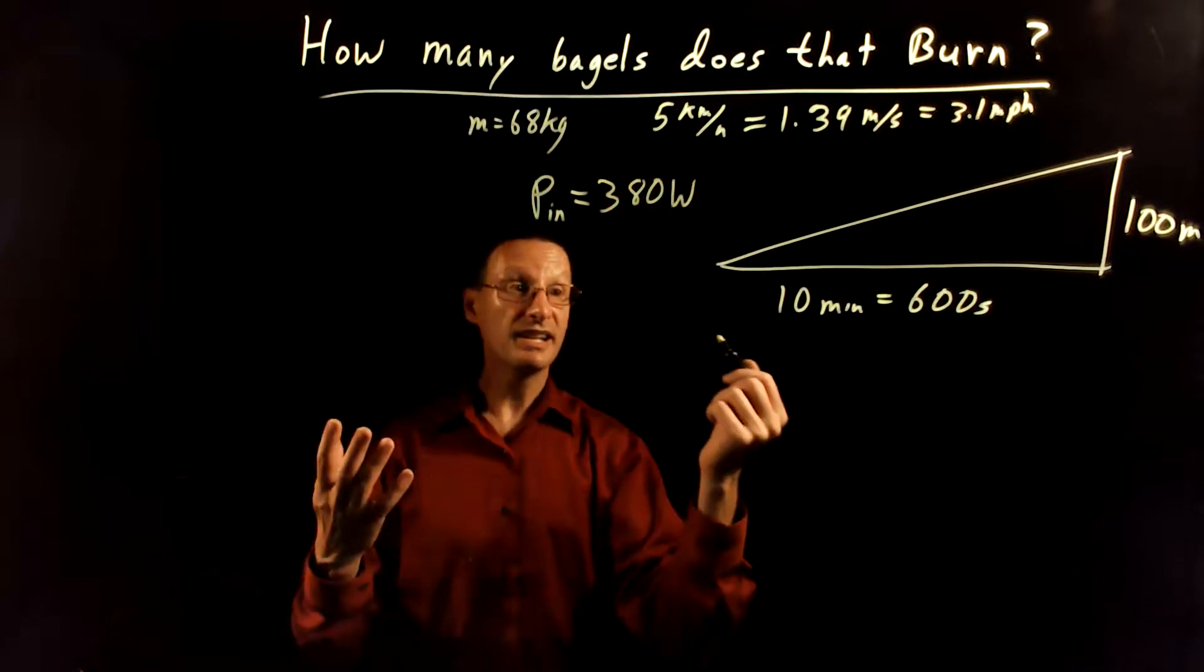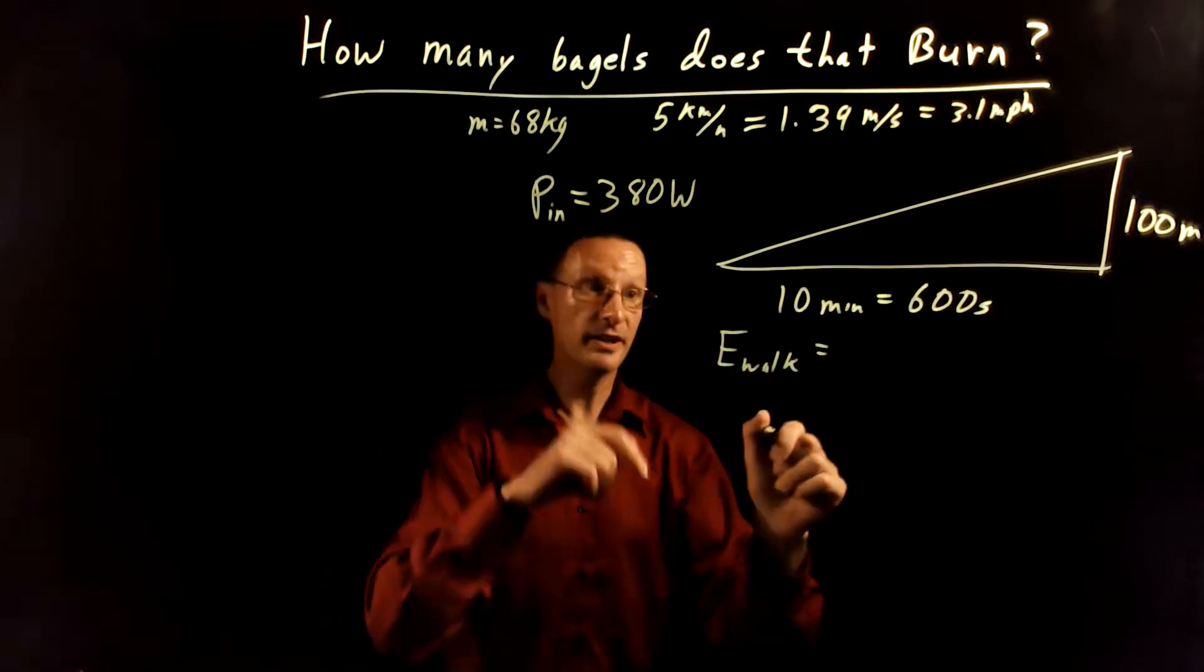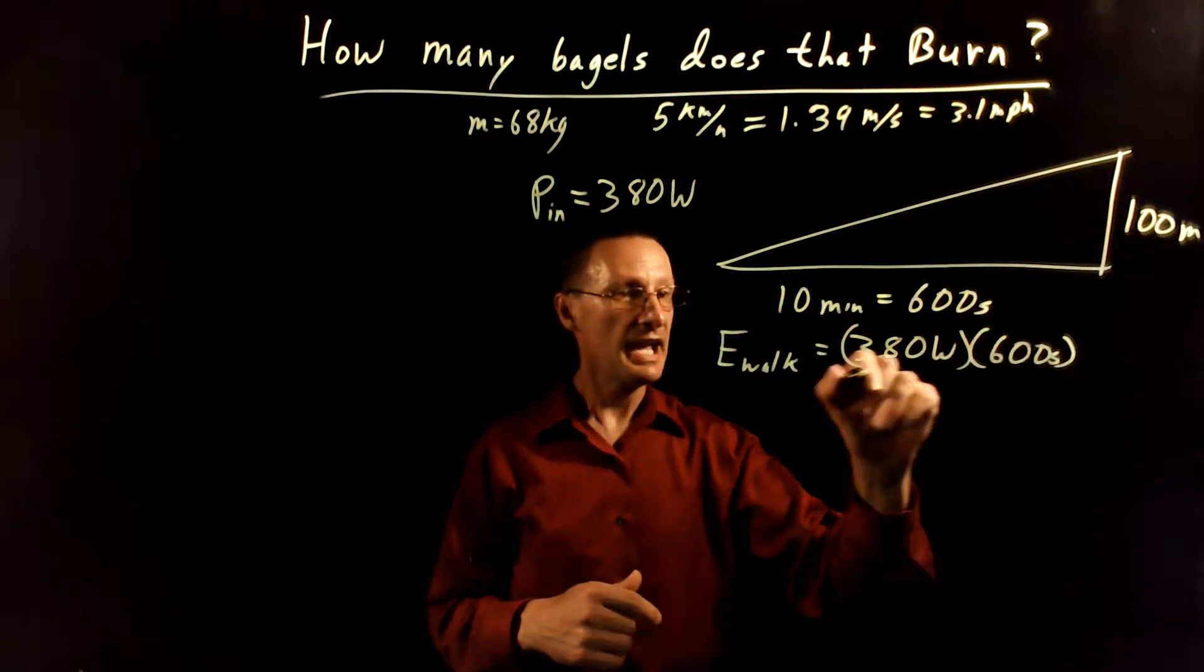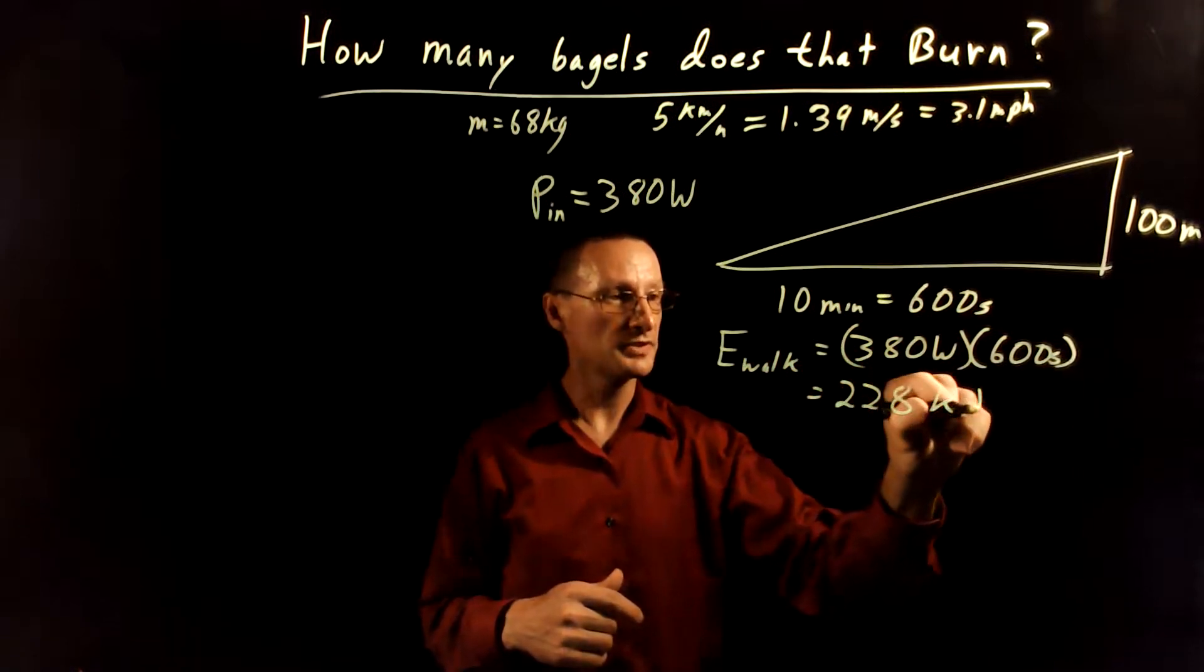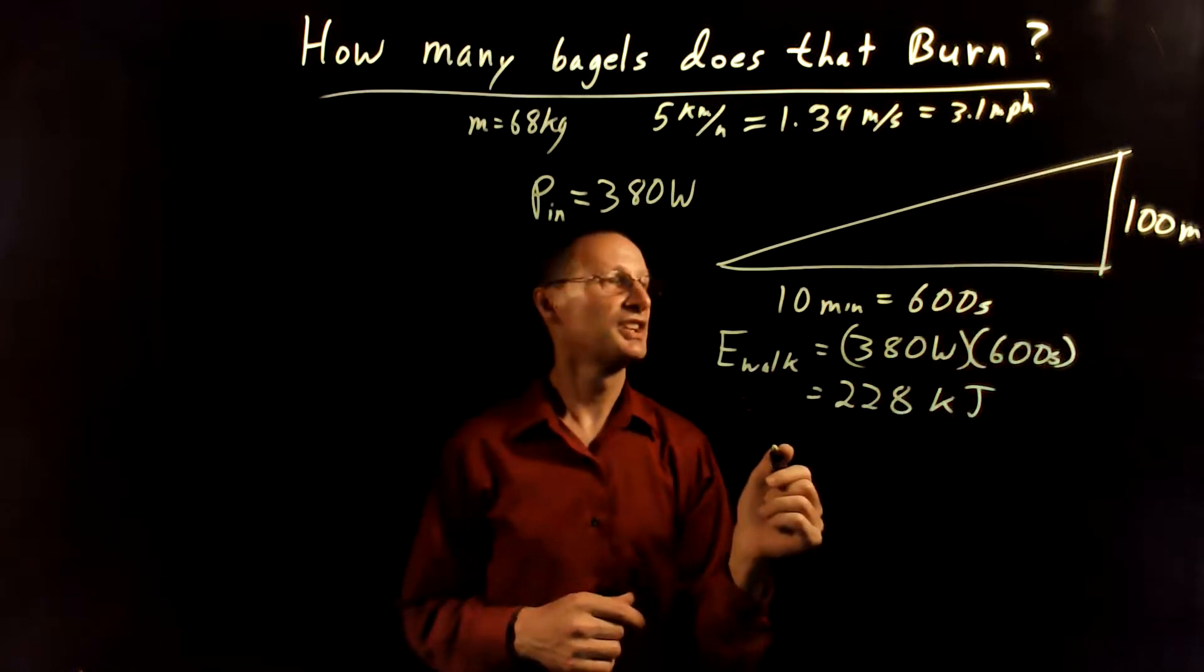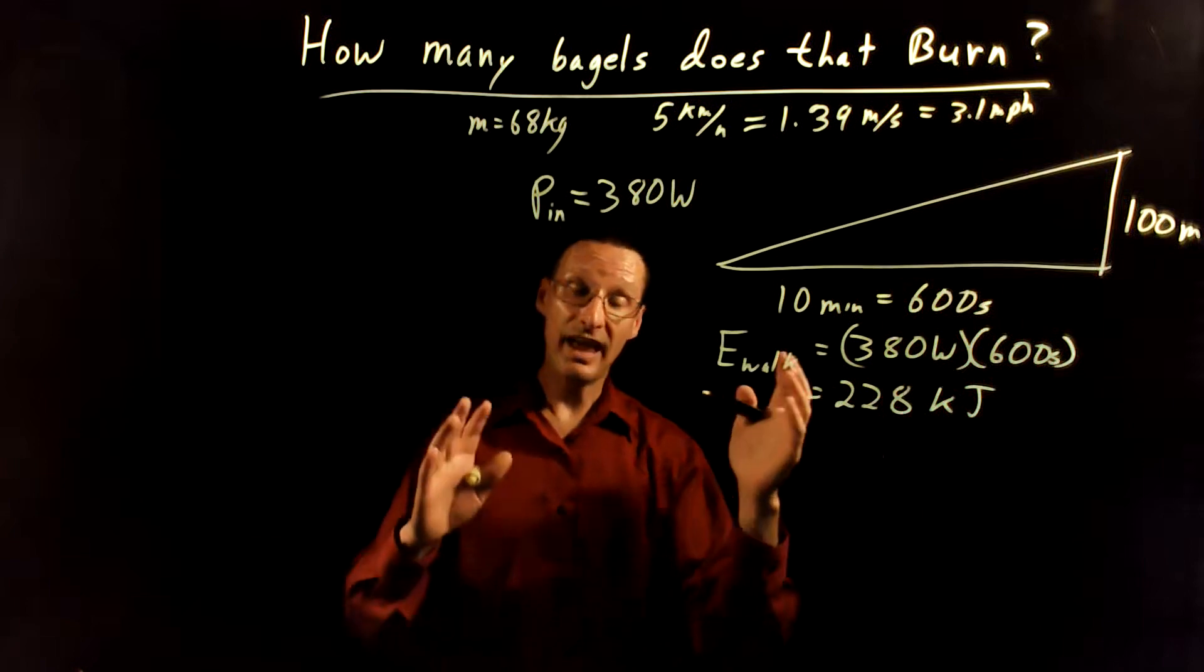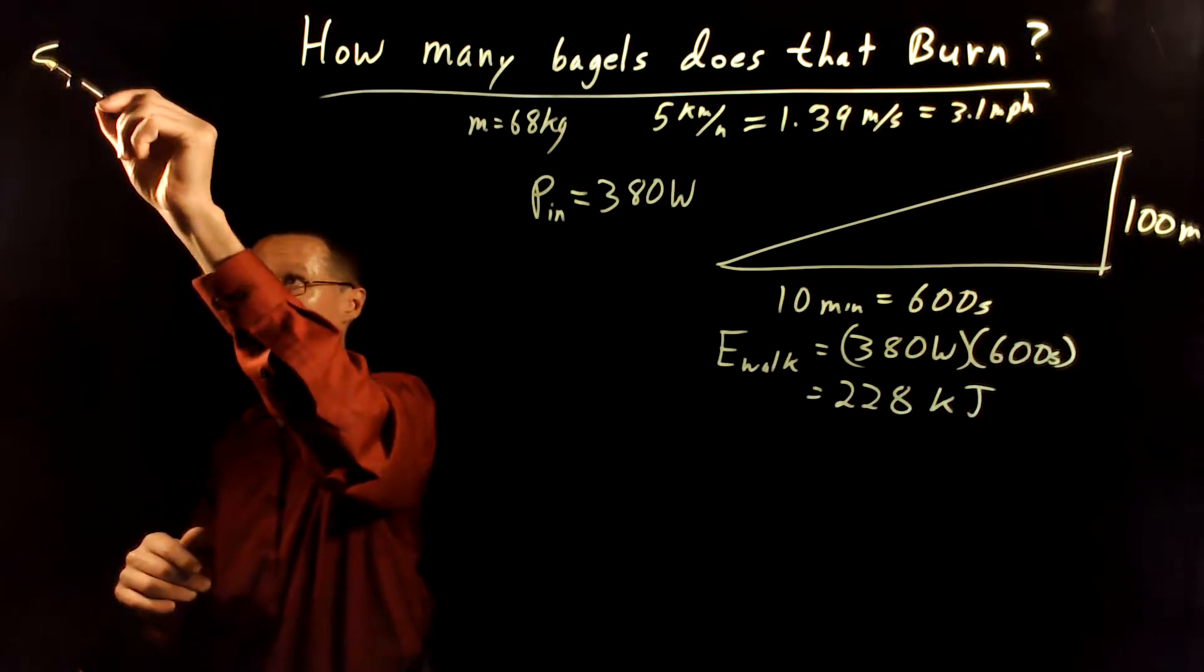So we can easily find the energy just from walking by taking this 380 watts and multiplying it by the 600 seconds, and that gives us 228 kilojoules if we multiply that out. Now, the problem with this is it doesn't tell us how much energy we spend by climbing 100 meters. And so that we have to compute that, we need to know something about efficiency. So let's talk about efficiency.